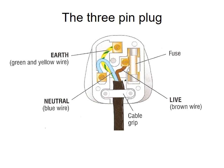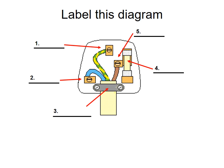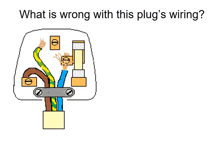Here's an example of a three-pin plug. If you opened up a plug, you would see the three different wires. The brown live wire is linked to a fuse, and we'll look at fuses later. There's also the neutral blue wire, and the earth wire which goes down to the ground. Pause the video now and see if you can label the diagram from memory. The answers are: (1) earth wire, (2) neutral wire, (3) cable grip, (4) fuse, (5) live wire.